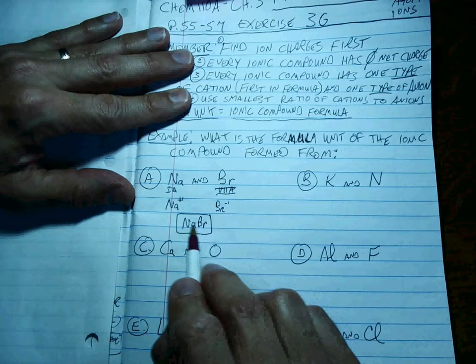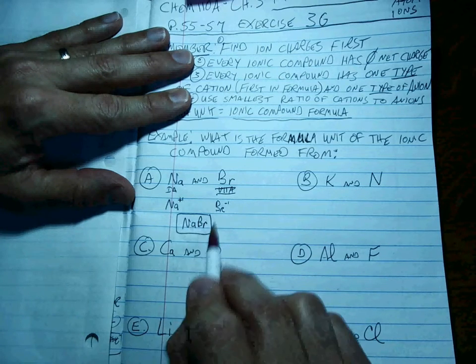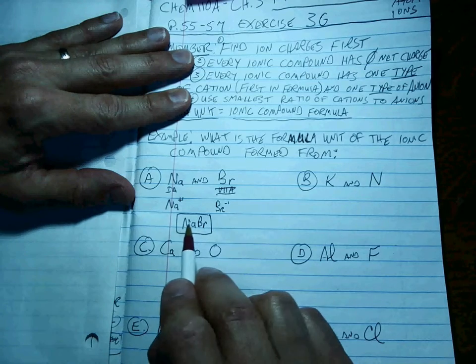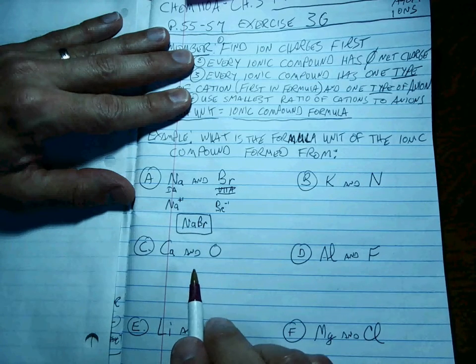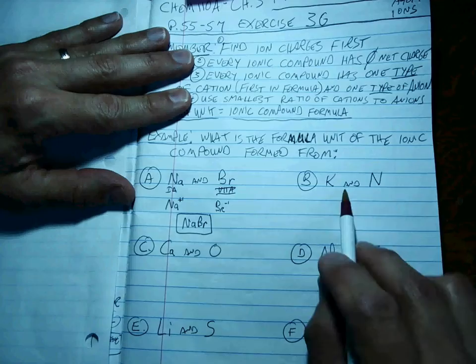Well, it's pretty clear that if you have a sodium plus 1 and a Br minus 1, one apiece added together will have a zero charge. And so the formula for this compound is NaBr. Because 1 plus 1 and 1 minus 1 adds up to zero. Cations first, anions second. Done. That's pretty simple.